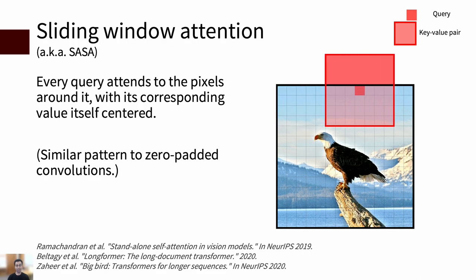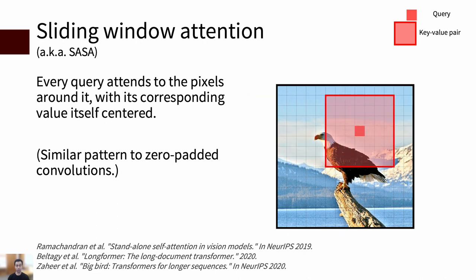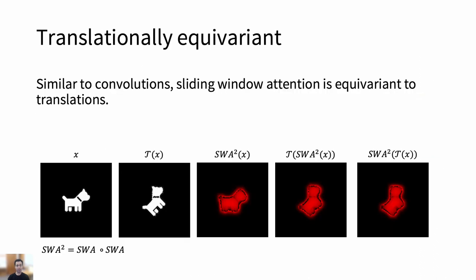Sliding Window Attention, aka SASA, does exactly that by localizing self-attention. The name is from the first vision paper proposing it, standalone self-attention, but variations for NLP also exist. The idea is straightforward. We simply have every token or pixel attend to a fixed number of tokens or pixels around it and ignore the ones that are out of bounds. End result, linear complexity.